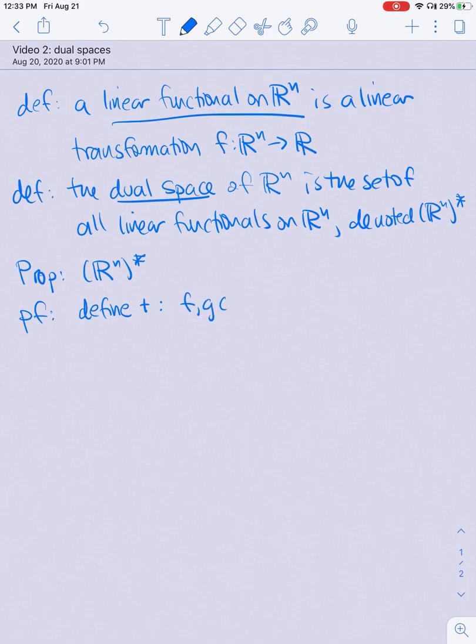So if I have F and G, two elements of Rⁿ star, and I want to define their sum, I need to tell you what their sum does to an element of Rⁿ. So F plus G should be some linear functional, and it should do something to an element V of Rⁿ. Well, there's one thing that's very clear that it could do. I could just define F plus G of V to be F of V plus G of V, and that's how I'm going to define it.